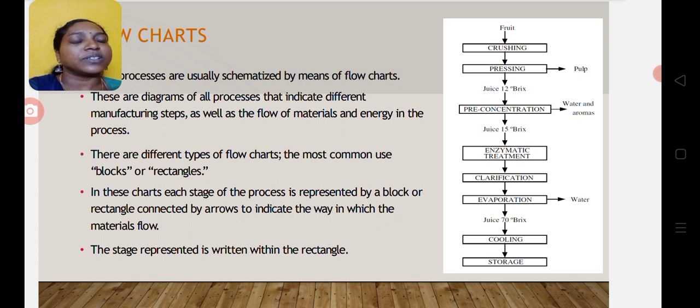From the fruit, the first step is the cleaning process, then crushing. After crushing comes pressing. From the pressing process, we get juice at a concentration of 12 Brix, which is the concentration unit of fruit juice.